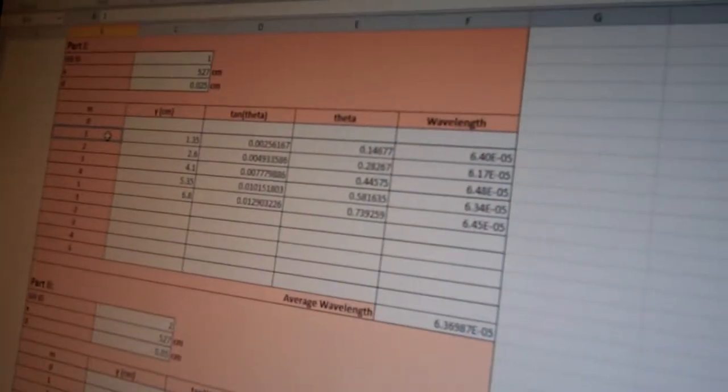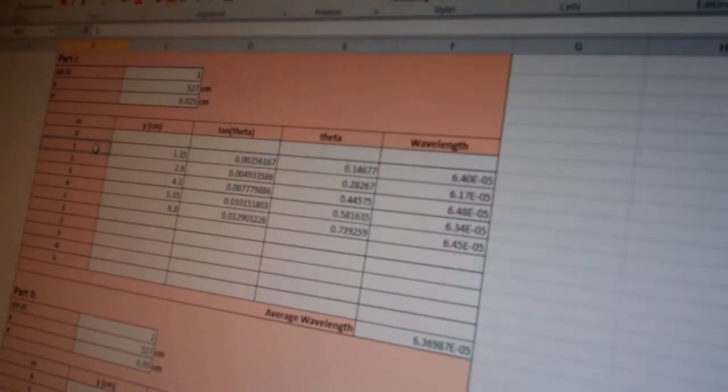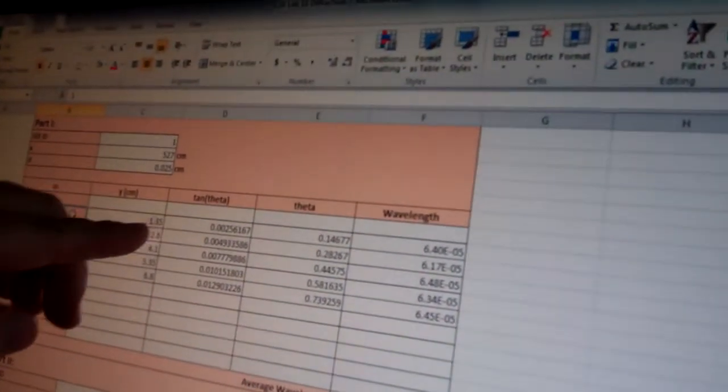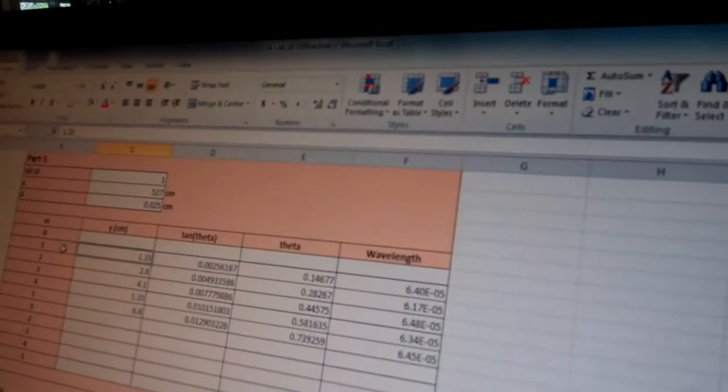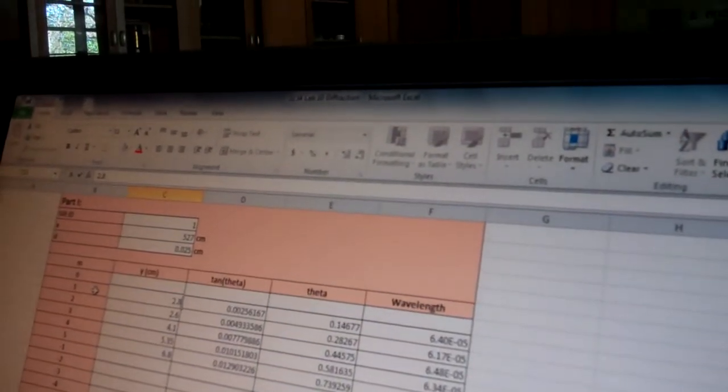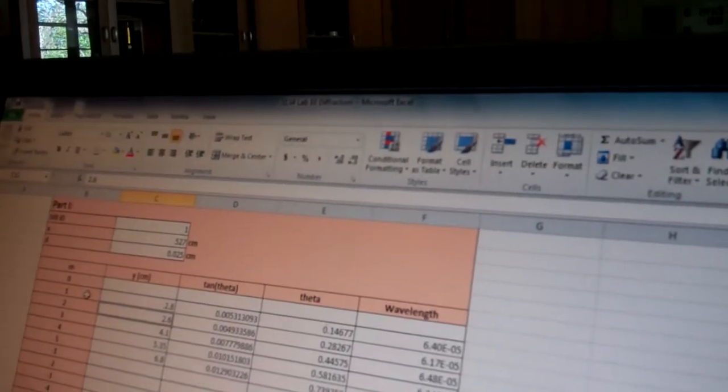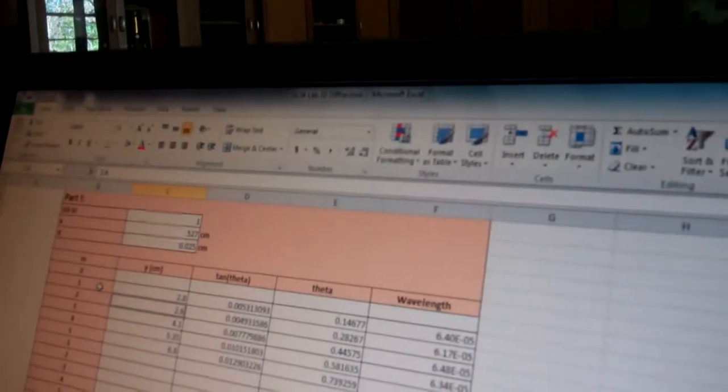So then we come back over to here, and we're going to fill out our Excel spreadsheet. Now, in this case, this spreadsheet is probably going to be a little bit revised here. But I said for m equals 1, that was the first one, that its y was 2.8, so I type in 2.8. And I said for y equals 2, it was 5.8.